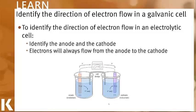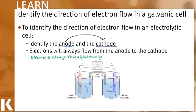To identify the direction of electron flow in a galvanic cell, we first need to identify the two electrodes — we need to identify the anode where oxidation is going to occur, and we need to identify the cathode where reduction is going to occur. Electrons will always flow from the anode to the cathode; this will never change. A great way to remember this is that electrons always flow alphabetically, meaning they always flow from the anode to the cathode.